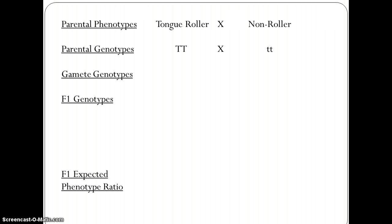The next line is for the gamete genotypes. Remember you should always display the gamete genotypes in circles. In this case each parent can make two different gametes but each containing the same allele. The tongue rolling parent can make a gamete with a large T present, and the non rolling parent can make gametes with a small t present.